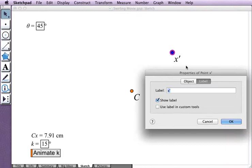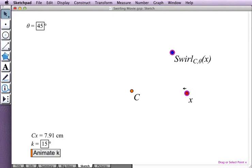And name it swirl because of what I'll be doing with it in a moment. So this is the swirl about point C by angle theta of independent variable X.